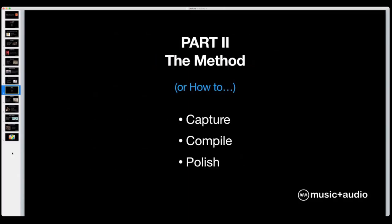So part two: if part one was the players and the different elements that come into play for vocal production, part two is going to be the method — what do you do with those elements once you have them. This can be divided into three different stages: capture, compile, and polish. We're going to go over each one of those.